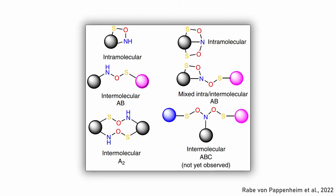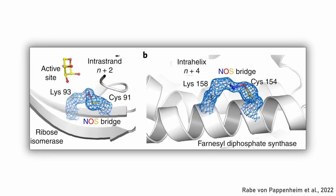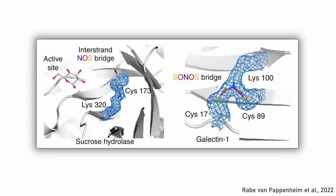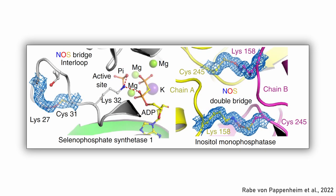Besides intramolecular NOS bridges, different types of intermolecular bridges and SONOS bridges have been observed. The bridges can be within one strand or helix, between strands, within a loop, or there can be two parallel NOS bridges.